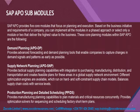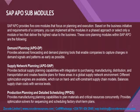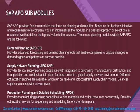Production Planning and Detailed Scheduling (PP/DS) provides manufacturing planning capabilities to plan materials and critical resources concurrently, with an optimization solver for sequencing and scheduling short-term factory plans. ECC also has production planning tools, including MRP — Material Requirements Planning — which we looked at when we covered material master and material management. You can also plan using Planned Independent Requirements within ECC, which we will look at.